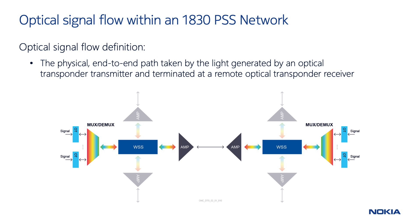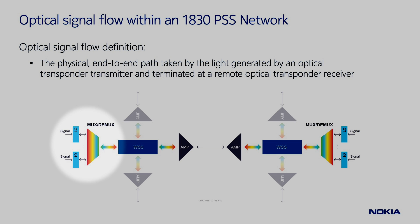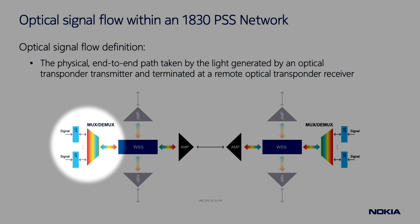A complete understanding of the optical signal flow is very important to start any troubleshooting process. A high-level representation of the optical signal flow is depicted in this figure. An optical signal, or wavelength, coming from a client device is converted by an optical transponder into a predefined ITU-compliant wavelength. All the wavelengths originated from several transponders are then combined by a WDM filter into a multi-wavelength optical signal to be transmitted over a single fiber.